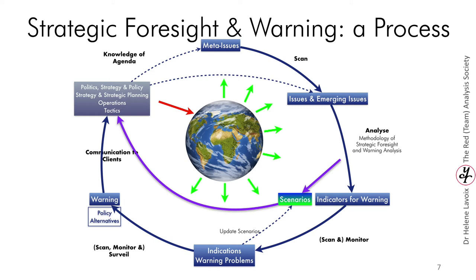This politics, strategy and policy will give you the agenda, and out of this agenda, you will identify what are your meta-issues. The meta-issues can be something as broad as security in general, or energy, or water problems. Then, out of these meta-issues, you will make a scan to try to understand what those meta-issues are about and find more precise issues. For example, if you take energy, you will have issues related to oil, gas, nuclear, and so on. When you do a scan, you are trying to identify which can be the emerging issues or new domains that you need to look at — for example, asteroid mining in space or deep sea resource mining.